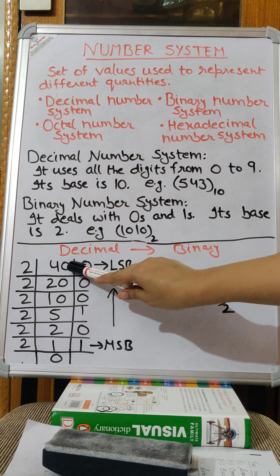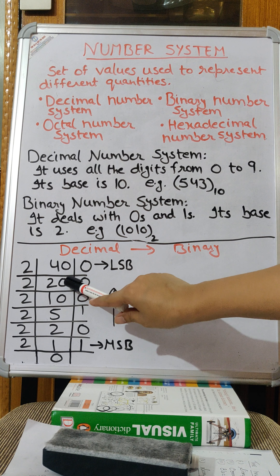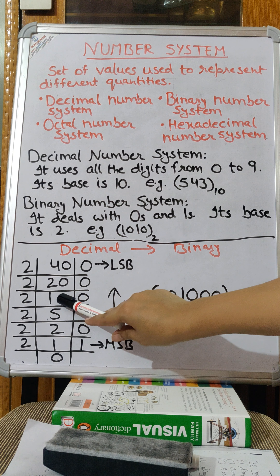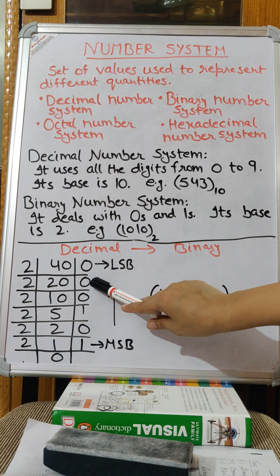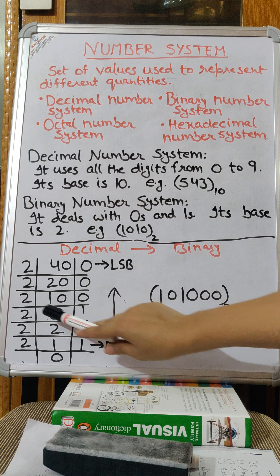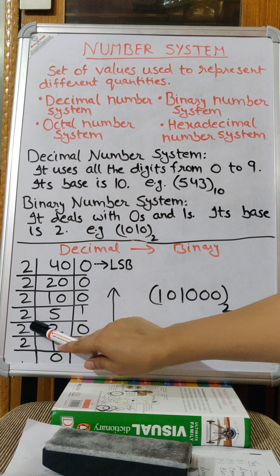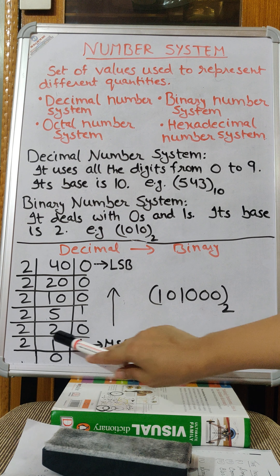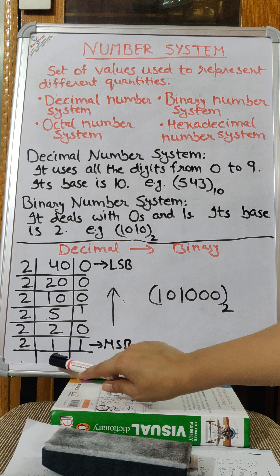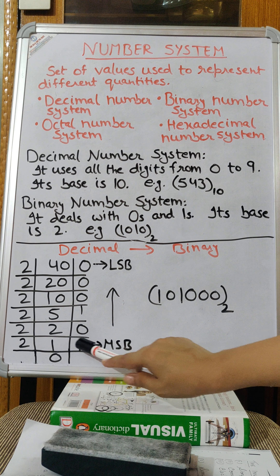You keep on dividing 40 by 2 until you get 0 as a dividend. So let's start. First divide 40 by 2 — quotient 20, remainder 0. Write 0. Divide 20 by 2 — quotient 10, remainder 0. Divide 10 by 2 — quotient 5, remainder 0. Divide 5 by 2 — quotient 2, remainder 1. Write 1. Divide 2 by 2 — quotient 1, remainder 0. You keep dividing until the dividend is 0, so write quotient 1 with remainder 1.